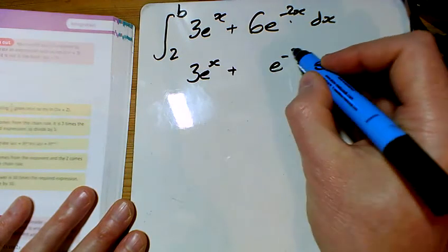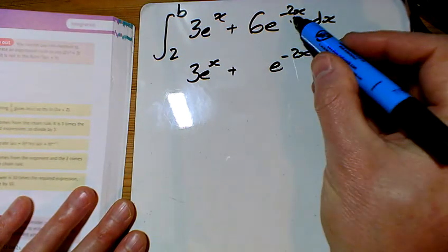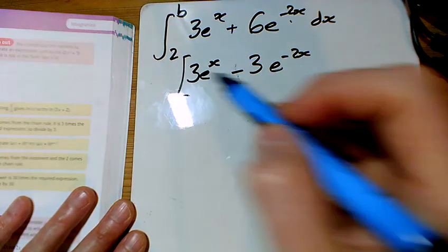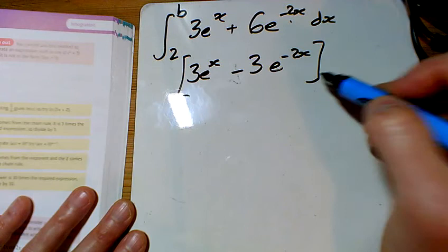The e^(-2x) is going to stay the same. We're going to divide by the coefficient of x, so we've got a minus. That's coming up in exercise 3b.